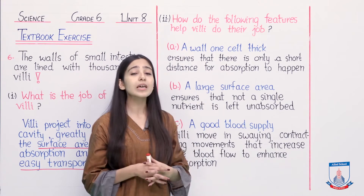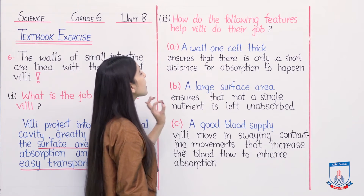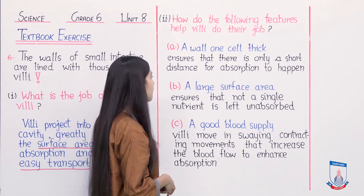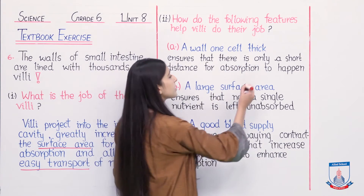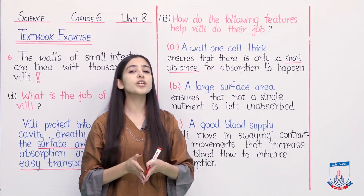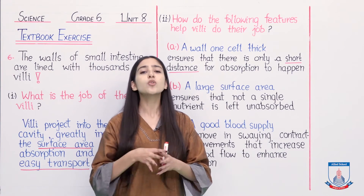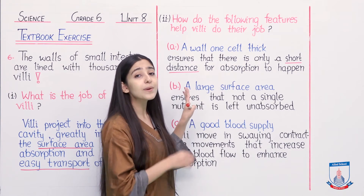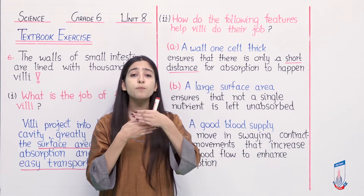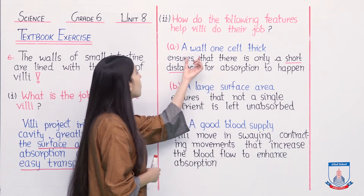Let's see what the answer is. First, feature (a): a wall one cell thick. How does a one-cell-thick wall help? It ensures that there is only a short distance for absorption to happen. If the distance from one place to another is short, transportation becomes easier. Just like if a store is right next to your house, it's very convenient. Similarly, the thin cell wall means nutrients don't have to travel far. From the intestinal fluid on one side to the blood on the other side, nutrients are easily transported. That is the benefit of a one-cell-thick wall.